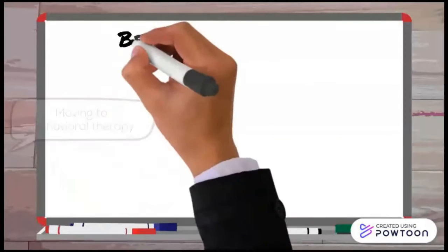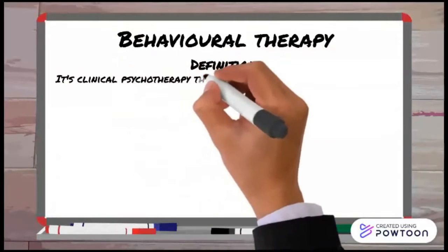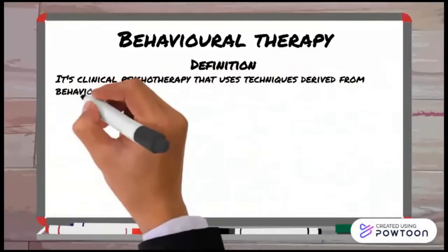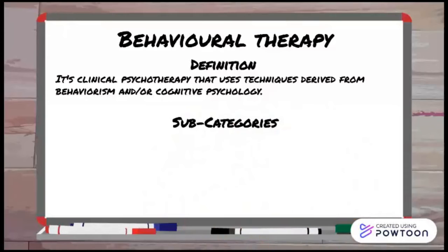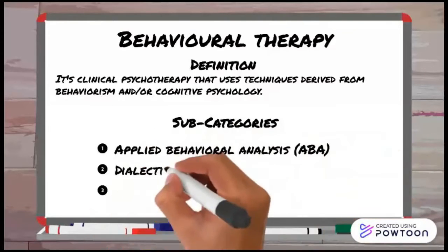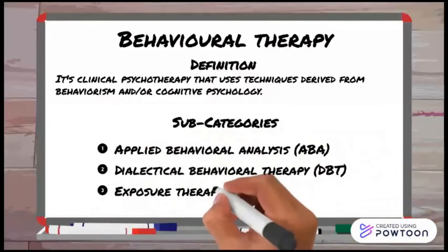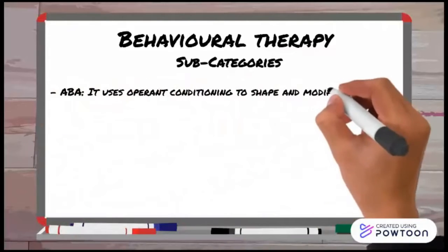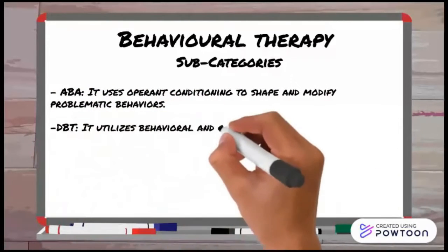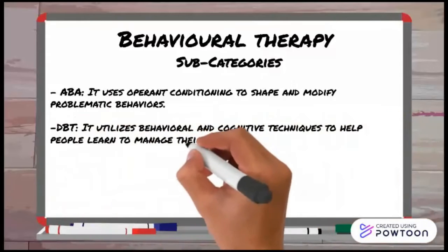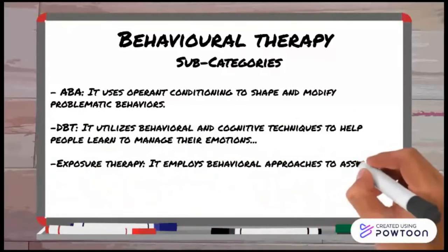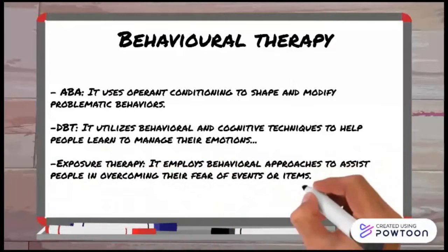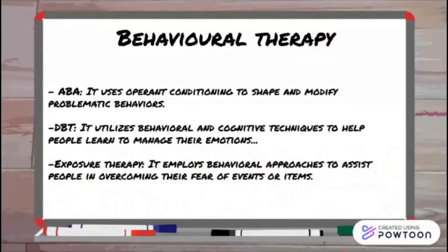Moving to behavioral therapy. It's clinical psychotherapy that uses techniques derived from behaviorism and/or cognitive psychology. The subcategories are Applied Behavioral Analysis (ABA), Dialectical Behavioral Therapy (DBT), and Exposure Therapy. ABA uses operant conditioning to shape and modify problematic behaviors. DBT utilizes behavioral and cognitive techniques to help people learn to manage their emotions. Exposure therapy employs behavioral approaches to assist people in overcoming their fear of events or items.